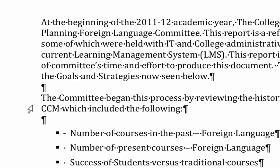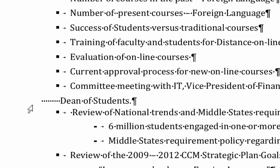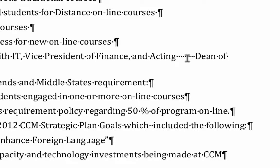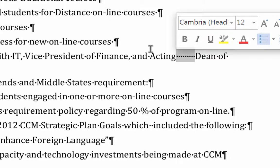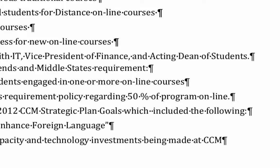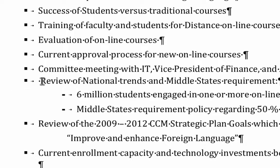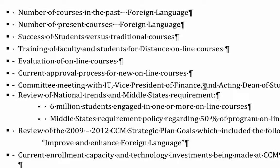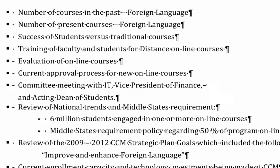Now we move to number six and fix this bullet list. One of the things we're going to do is get rid of a return in here, then get rid of these extra spaces and just replace them with a single space. There's an extra space in 'review' as well. If you need to break something to another line, you can do a Shift+Return to break it — I'll break 'acting students' to another line that way.